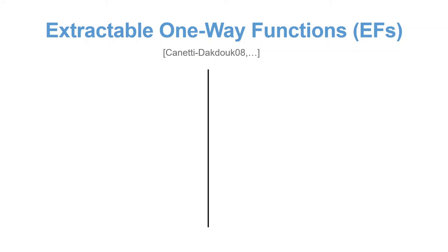An extractable one-way function is a family of functions that satisfies two properties. First, it is one-way, meaning that for a randomly sampled key and randomly sampled input, an efficient adversary will not be able to invert the function.